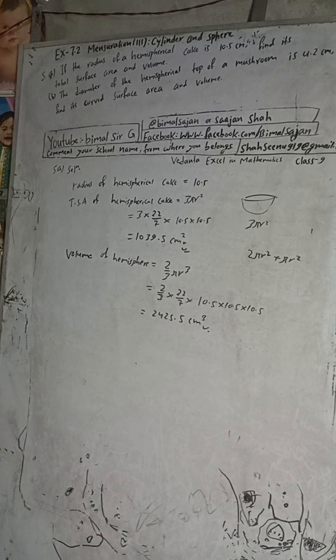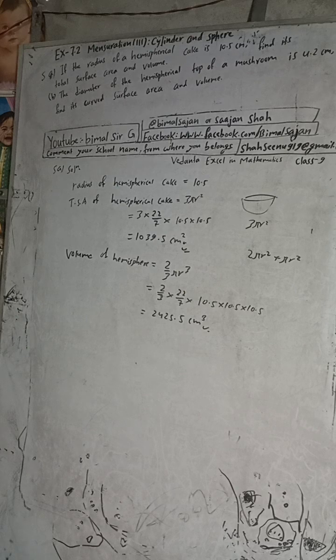So the answer to question 5a is: total surface area = 1039.5 cm² and volume = 2425.5 cm³. See you in the next video. Radhe Radhe, Jai Shri Krishna.